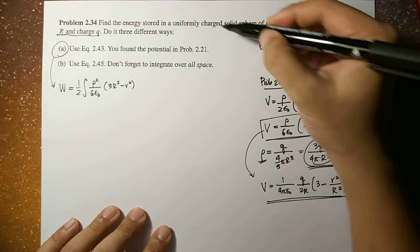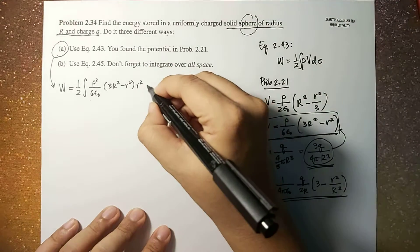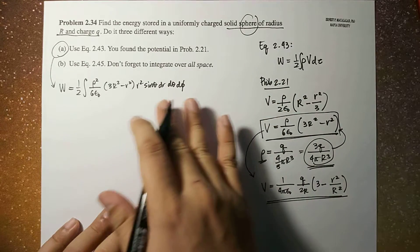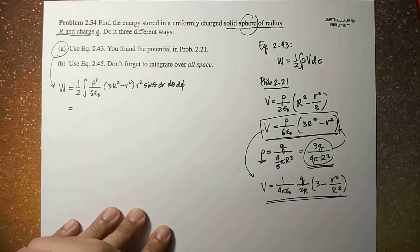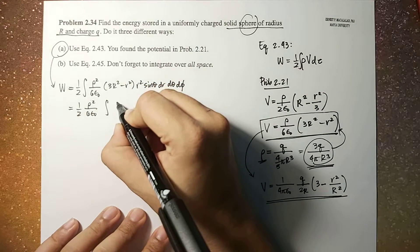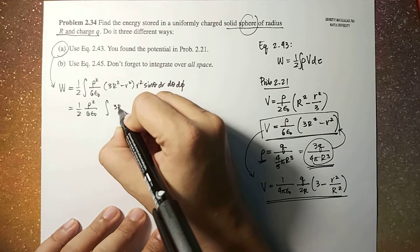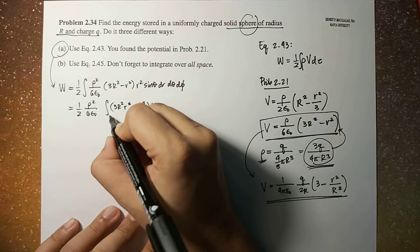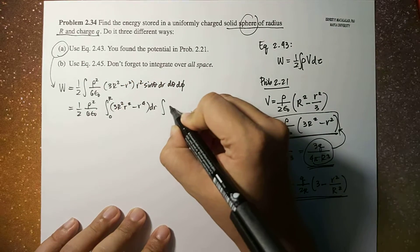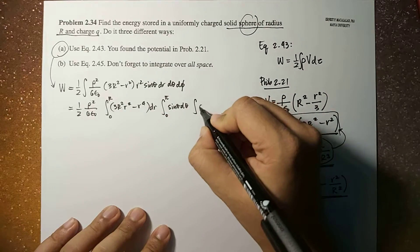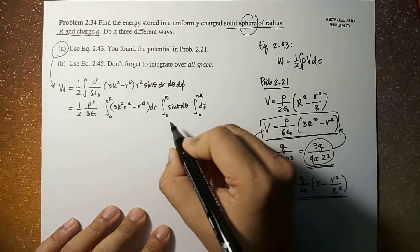In the spherical coordinate system, d-tau equals r squared sin(theta) dr d-theta d-phi. This becomes a triple integral: one half times rho squared over 6 epsilon-naught, integrated over (3R squared r squared minus r to the fourth) dr from 0 to R, times the integral of sin(theta) d-theta from 0 to pi, times the integral of d-phi from 0 to 2π.